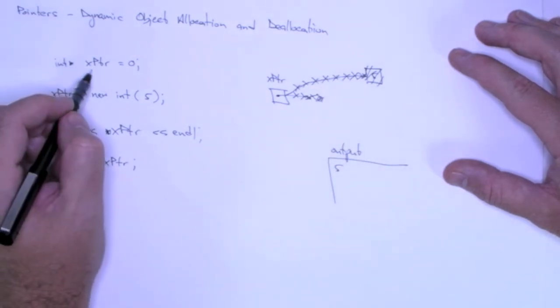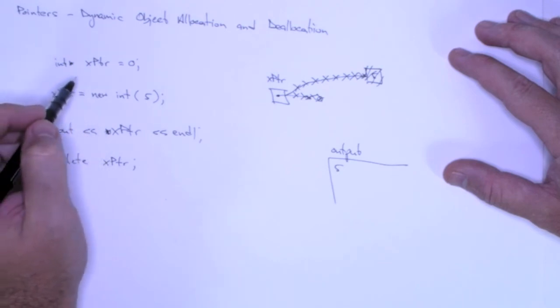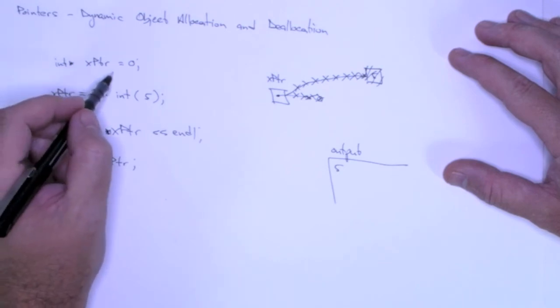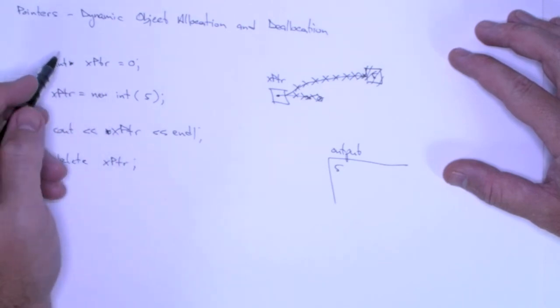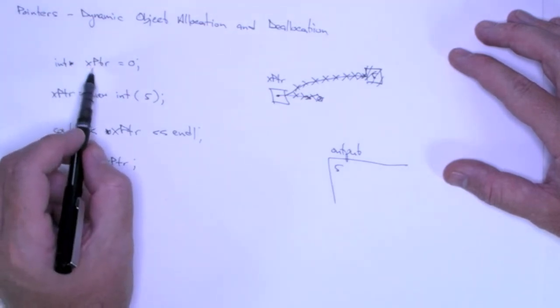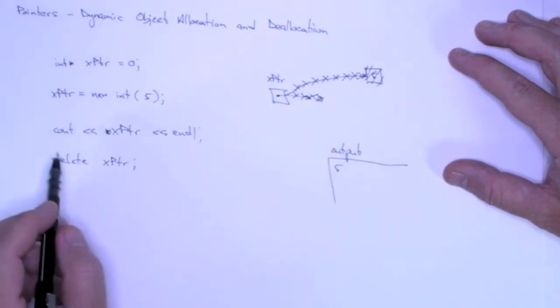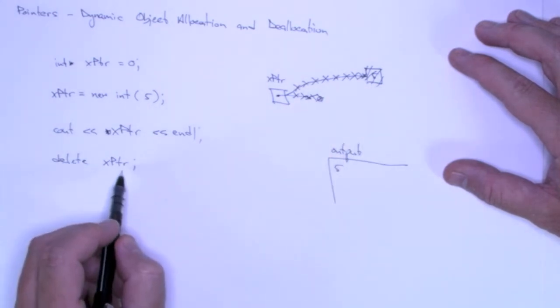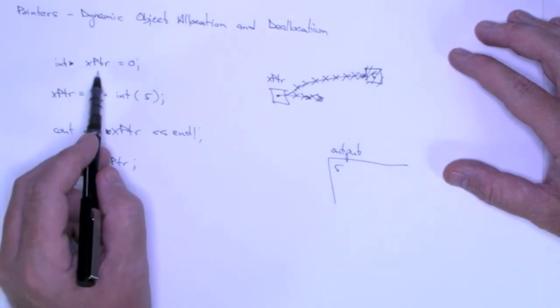Now the pointer, x pointer, is statically allocated, so it still resides in memory. It's important to distinguish between the pointer and the object it points to. Delete deallocates the object that the pointer points to. It does not deallocate the pointer itself.